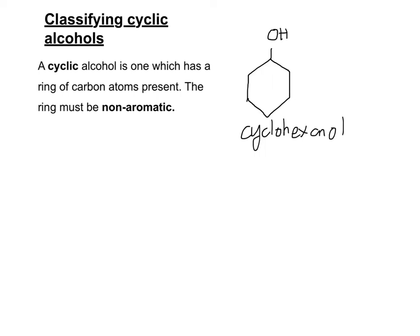If however, I draw a benzene ring, which you won't have come across yet if you're an AS student or a year one A-level student, you may have seen these online or in textbooks. They're drawn like this, and if they have an OH group coming off them, this is called a phenol. And this is not an alcohol because it behaves in a slightly different way.